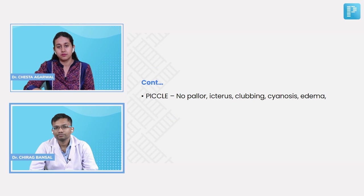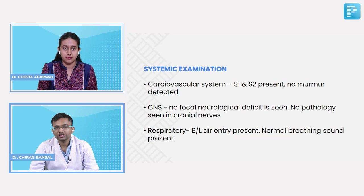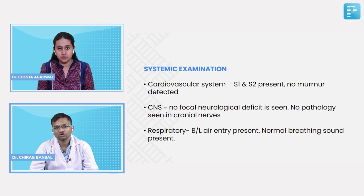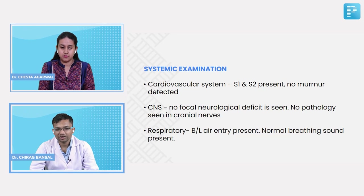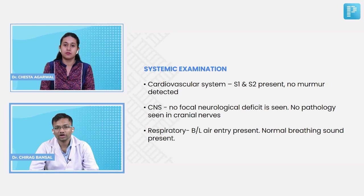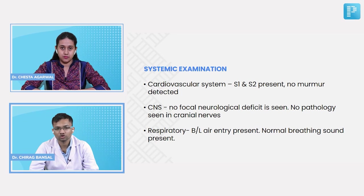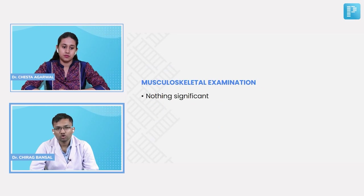Systemic examination: cardiovascular — S1 and S2 both heart sounds heard normally, no added murmur. CNS — no focal neurological deficit, no pathology in cranial nerves. Respiratory — bilateral air entry present normally with normal breath sounds. Musculoskeletal system — nothing significant.